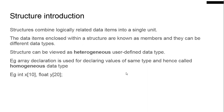In this video we are going to see about structures in C. Structures are one of the user-defined data types. They can contain logically related data items. For example, employee details — an employee's ID, name, PF number, salary — even if they are of different data types, they are logically related to that particular employee.